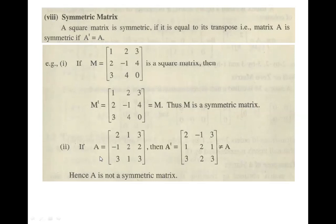Now let's look at one more example. We have matrix A, a square matrix with three rows and three columns. When we take its transpose, we write each row as the corresponding column. Then we compare A and A^T. The first corresponding entry is equal, but looking at the second entry: here we have 1 and -1. These two entries are not equal, which means A^T is not equal to A. Therefore, A is not a symmetric matrix.